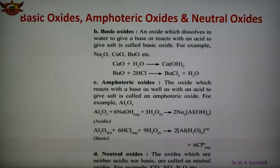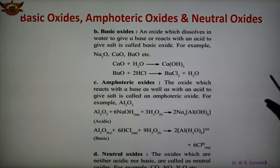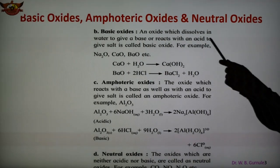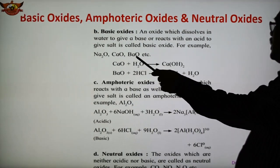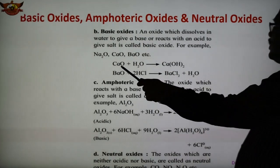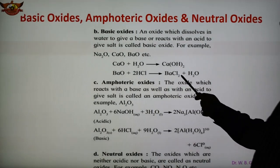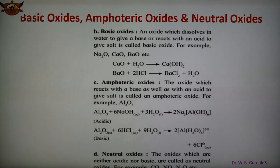Basic oxides are those which, when dissolved in water, give a base, or react with an acid forming a salt — opposite to acidic oxides. Examples are sodium oxide, calcium oxide, barium oxide. Calcium oxide dissolves in water forming calcium hydroxide. Barium oxide reacts with an acid — this base forms salt, barium chloride, and solvent.